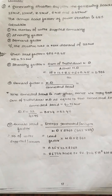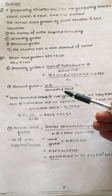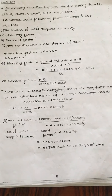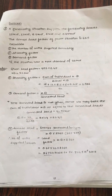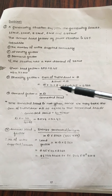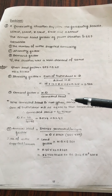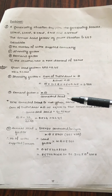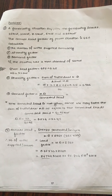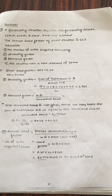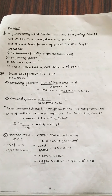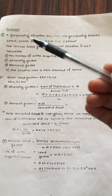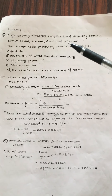Next, to find the demand factor: it is given as maximum demand divided by connected load. We know the maximum demand, but we need to determine the connected load. Since connected load is not given, we take the sum of the individual maximum demands as equal to the connected load.